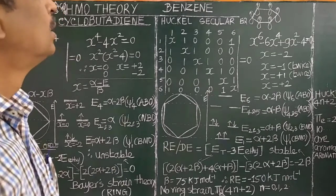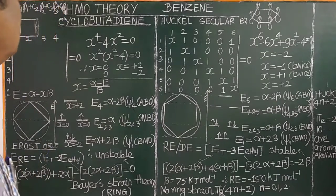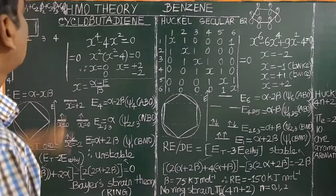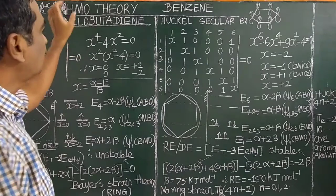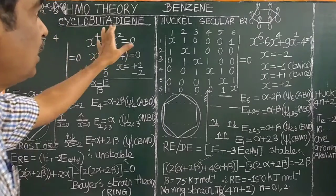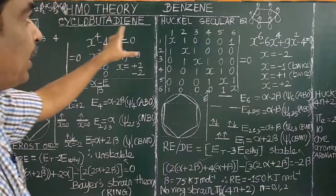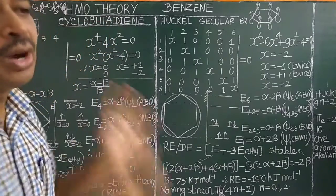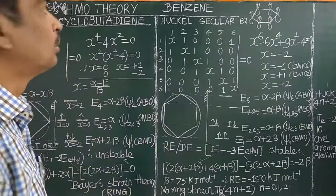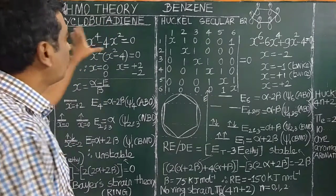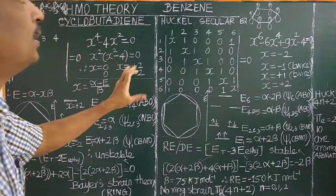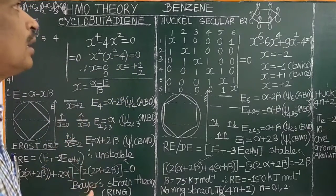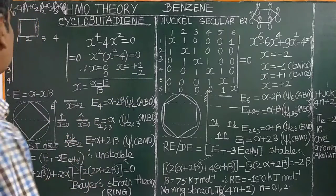Good morning. I am going to talk about Huckel Molecular Orbital Theory, its application to cyclic conjugated systems — for example, cyclobutadiene, benzene, naphthalene, etc.